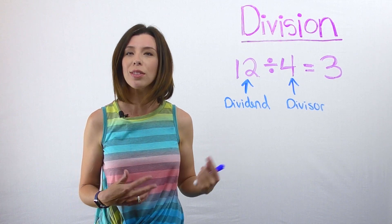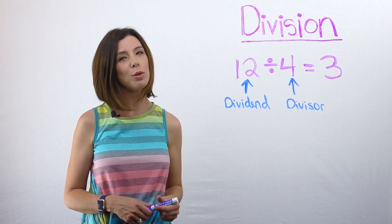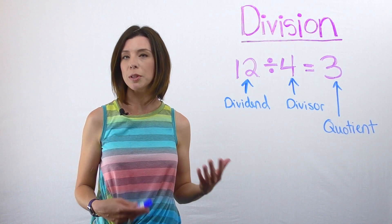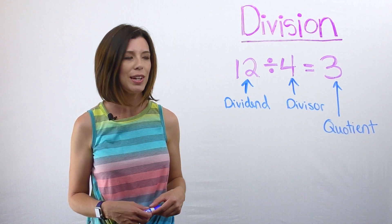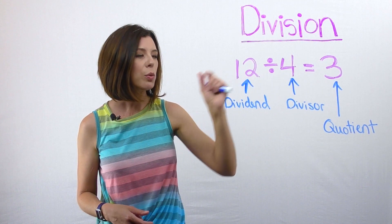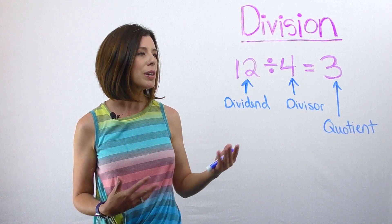That answer would be three, and that's going to be our quotient. You probably already know this, but we can use multiplication to actually check our division. If we take the quotient and multiply that by the divisor, we should get the dividend.